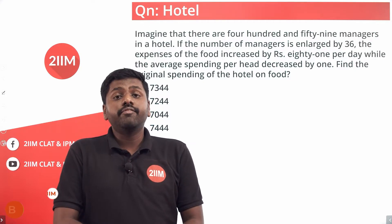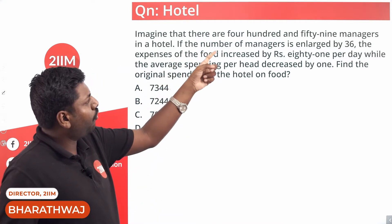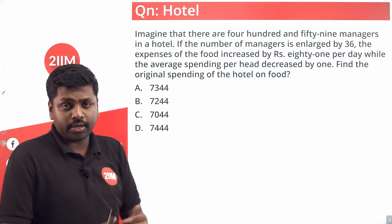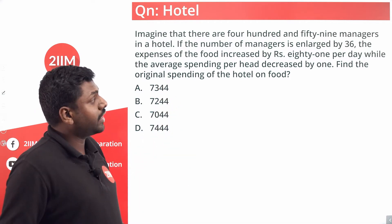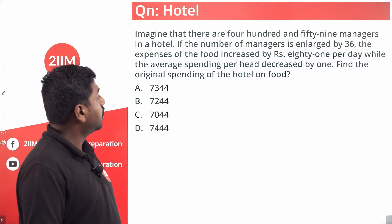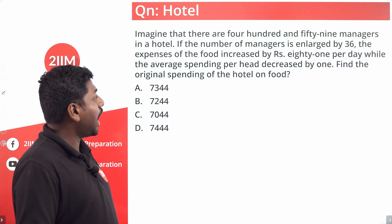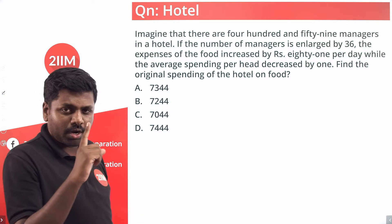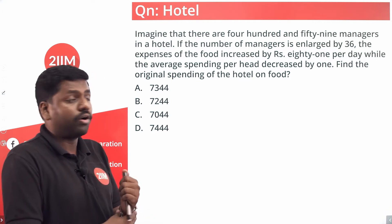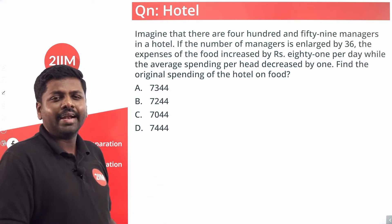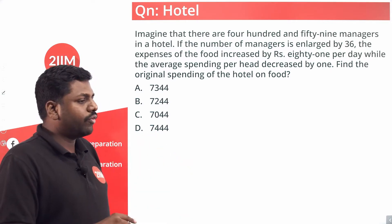An interesting question on fixed and variable cost. There are 459 managers in a hotel. If the number of managers is enlarged by 36, the expenses of the food increased by 81 rupees per day while the average spending decreased by 1. Find the original spending of the hotel on food. Let us write down what we know.